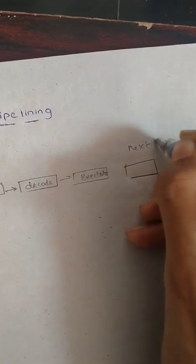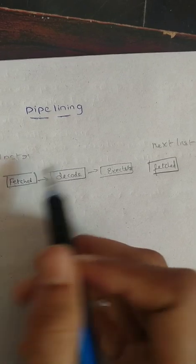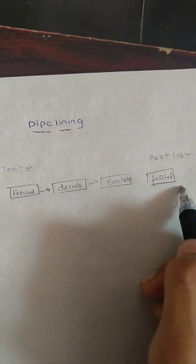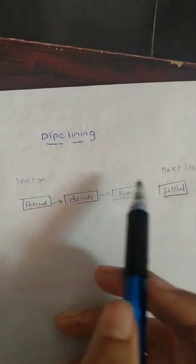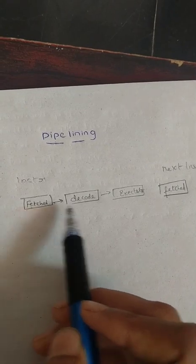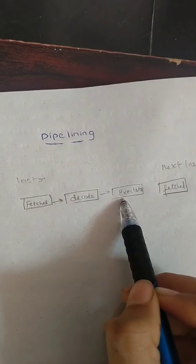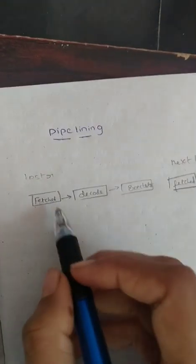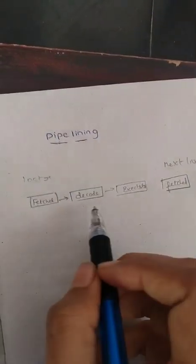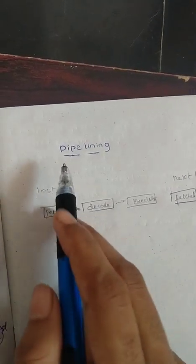So in earlier microprocessors, before the next instruction is fetched, we need to execute the first instruction completely. These three operations — fetch, decode, and execute — need to be performed on the first instruction, then only the next instruction can be fetched. So it is a very long process in which the next instruction needs to wait for a long time.